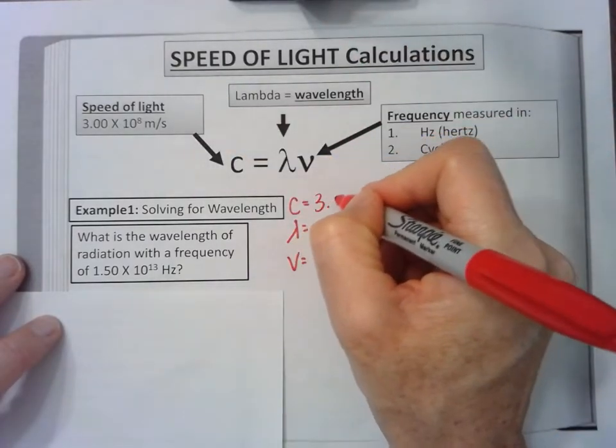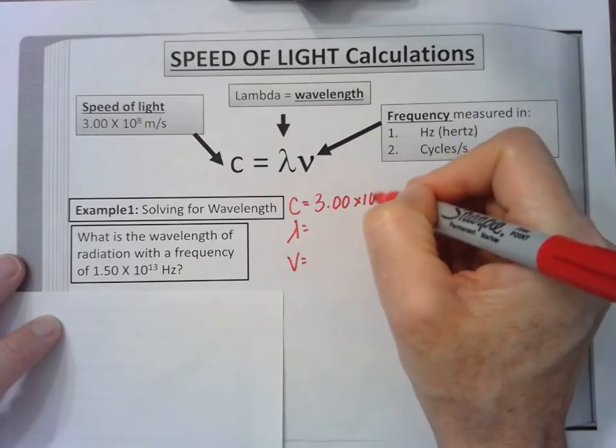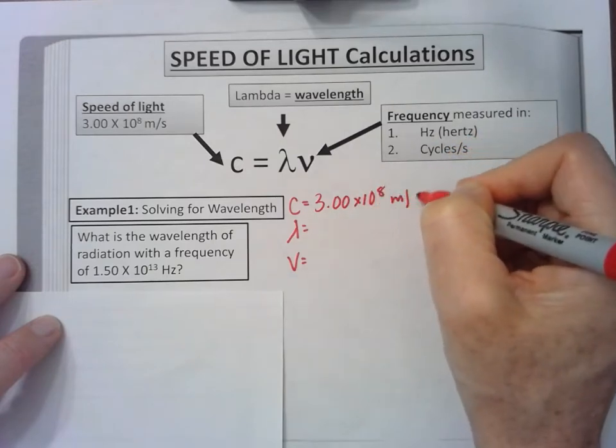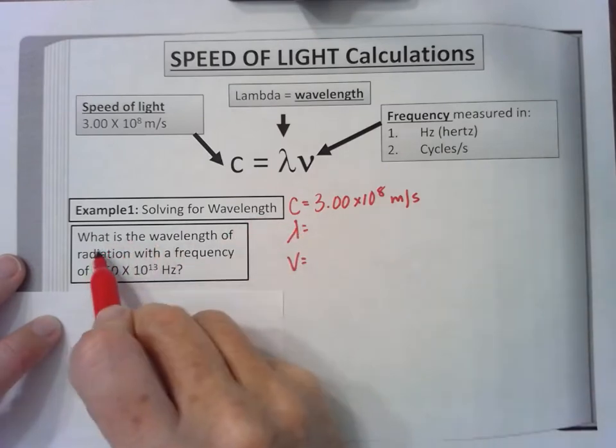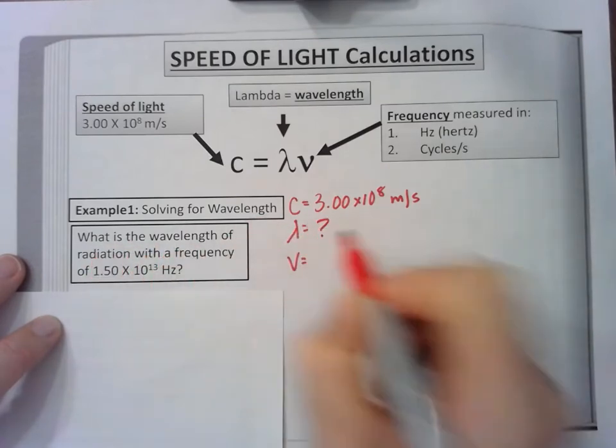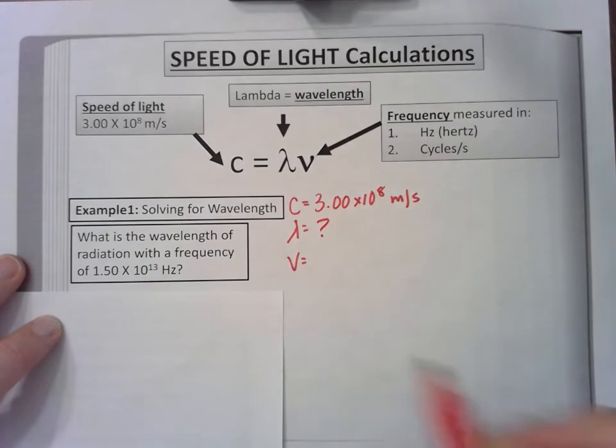So I'm going to write that in: 3.00 times 10 to the 8 meters per second. It says 'what is the wavelength?' so I'm going to put a question mark there. And we have the frequency.